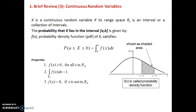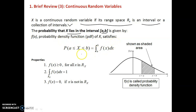X is a continuous random variable if its range space Rx is an interval or a collection of intervals. The probability of X lying between an interval is defined via the probability density function: P(a ≤ X ≤ b) = integral from a to b of f(x) dx, and it must satisfy the following properties.